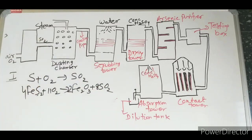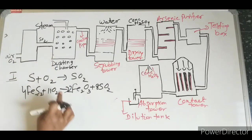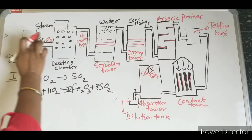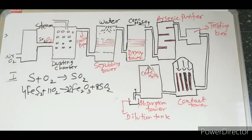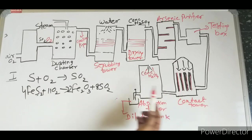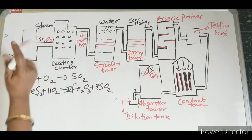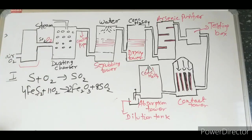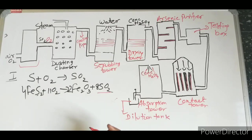Along with sulfur dioxide, continuous supply of oxygen is required throughout the oxidation process. The second step is purification of sulfur dioxide. Whatever sulfur dioxide is obtained is not 100% pure and needs to be purified through different stages.